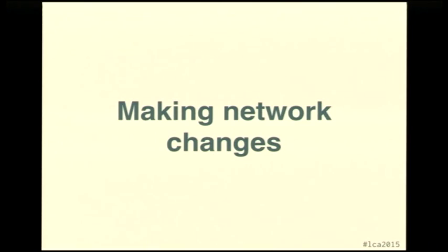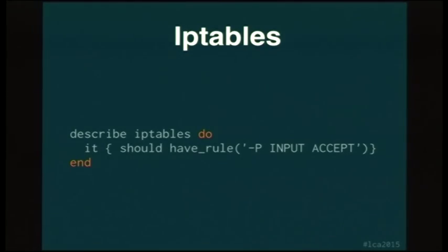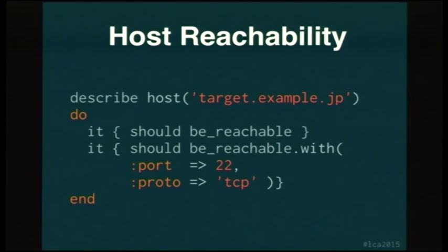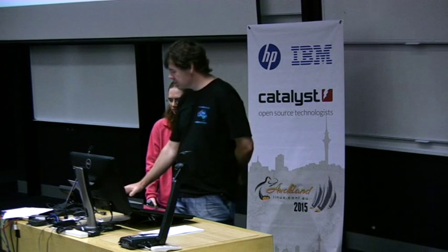Another thing ServerSpec is useful for is making network changes. You can verify that your iptables rules are as you expect, and you can limit this to checking a rule is in a particular chain. ServerSpec doesn't only check the host you're on — it can also look at other hosts from the host you're on and check that they're reachable on particular ports in either TCP or UDP. ServerSpec doesn't forget about Windows either.